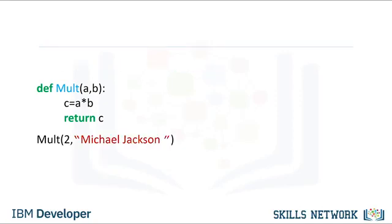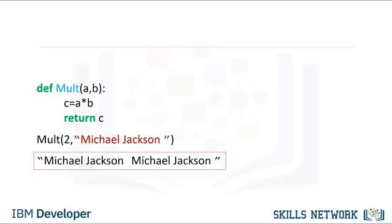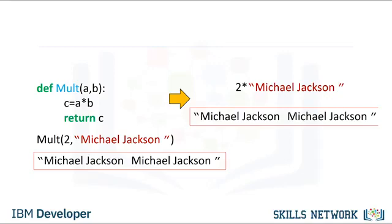If we pass in the integer 2 and the string 'Michael Jackson', the string Michael Jackson is repeated two times. This is because the multiplication symbol can also mean repeat a sequence. If you accidentally multiply an integer with a string instead of two integers, you won't get an error — instead you will get a string, and your program will progress, potentially failing later because you have a string where you expected an integer. This property will make coding simpler, but you must test your code more thoroughly.